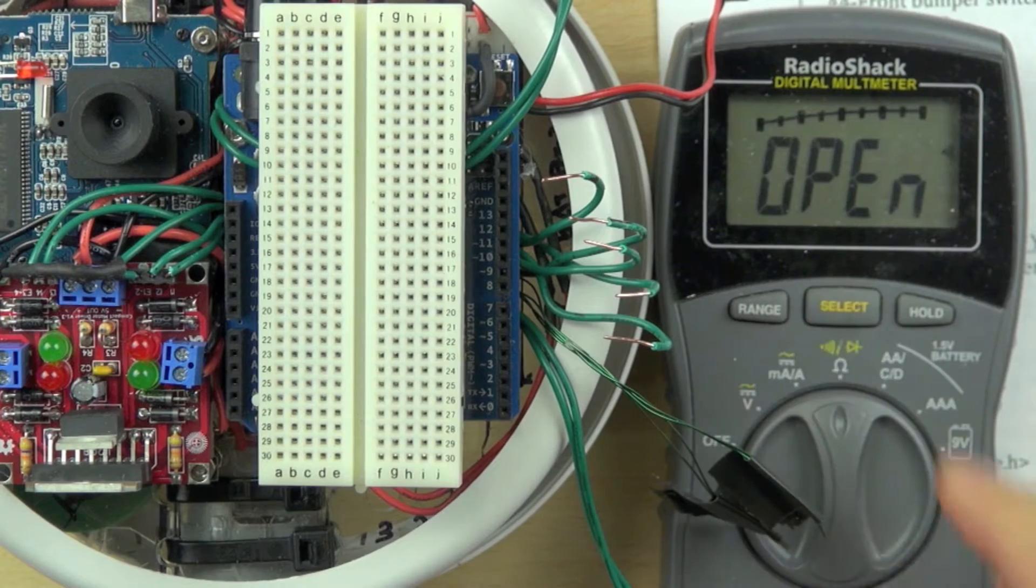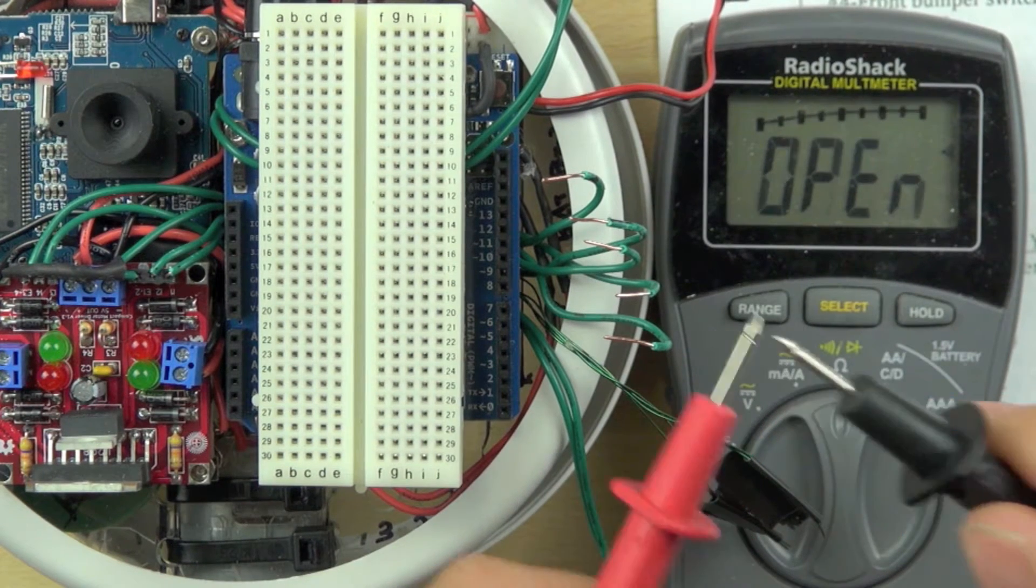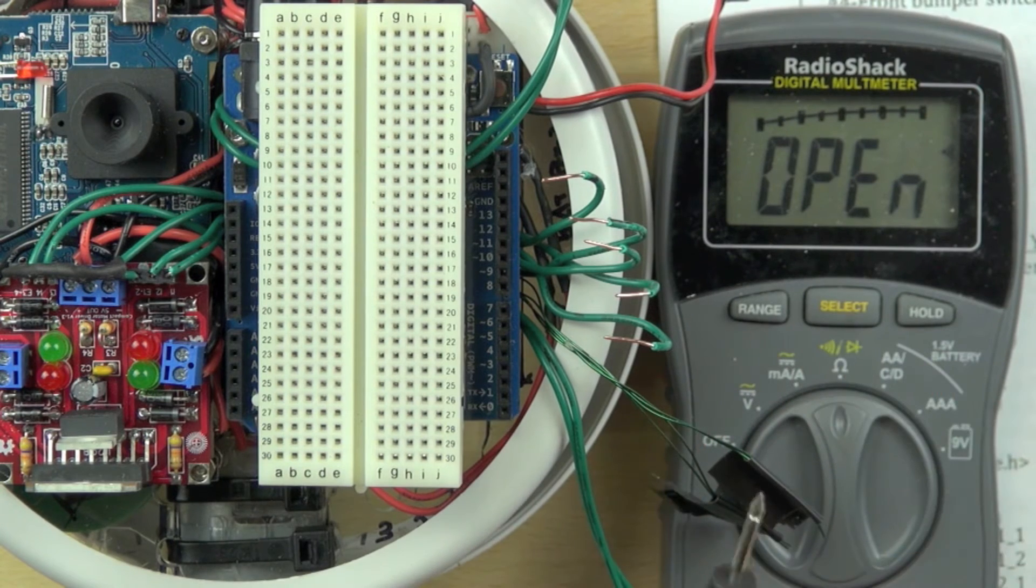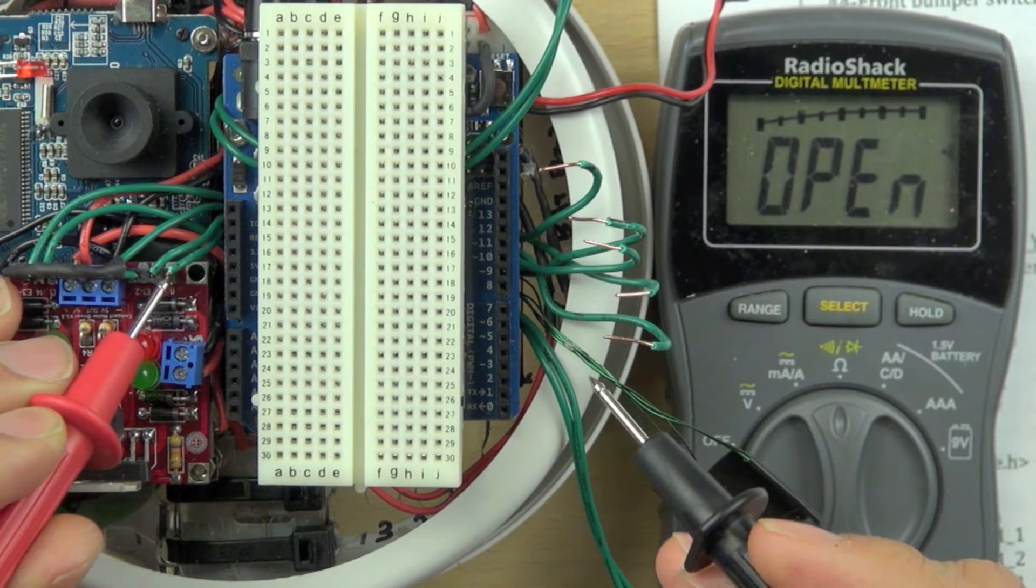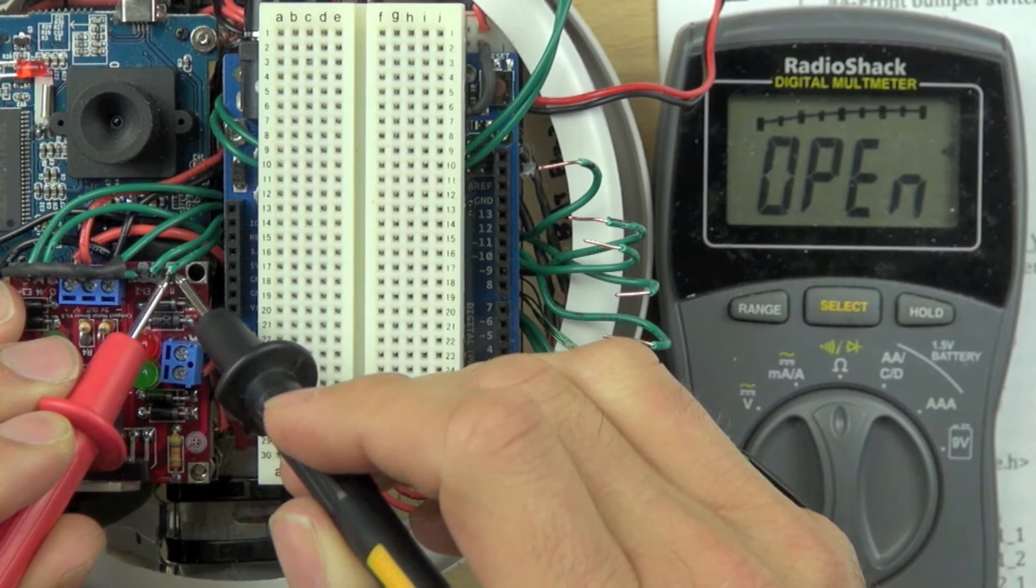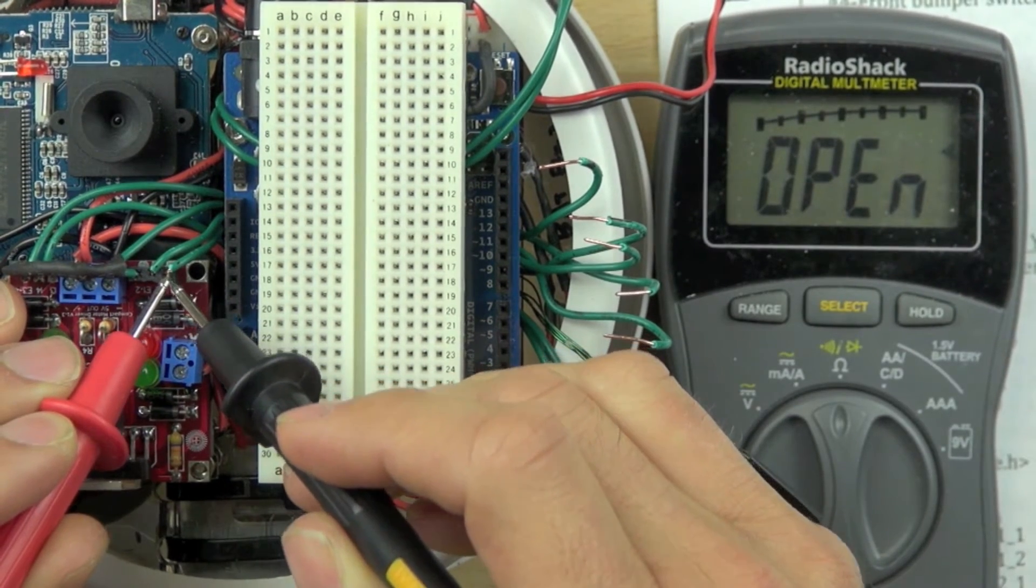We're setting our multimeter to open, and this will allow us to test for continuity. When you hear the beep, it means there's a continuous electrical flow there, and it'll allow us to identify which wire is which.